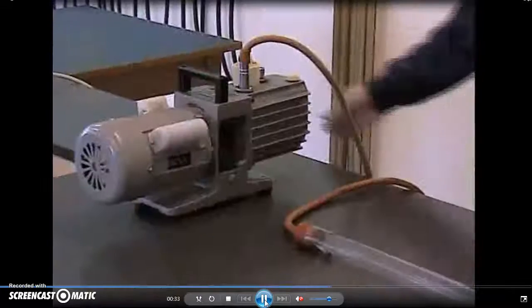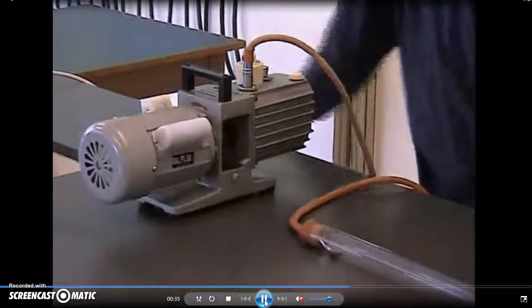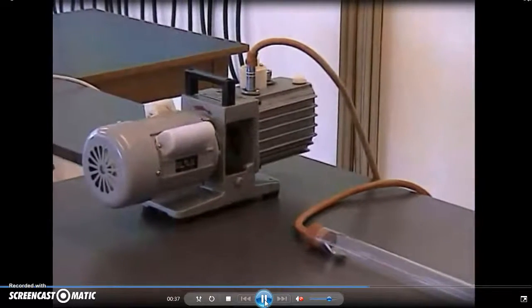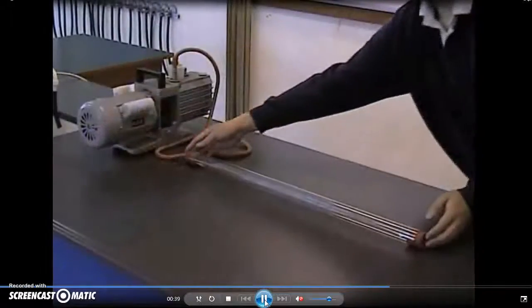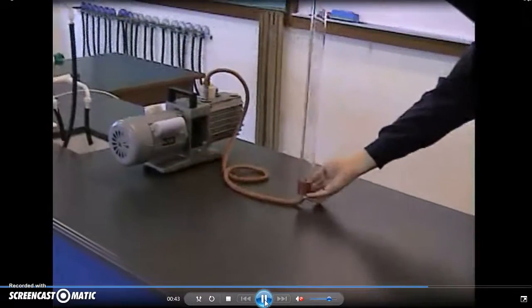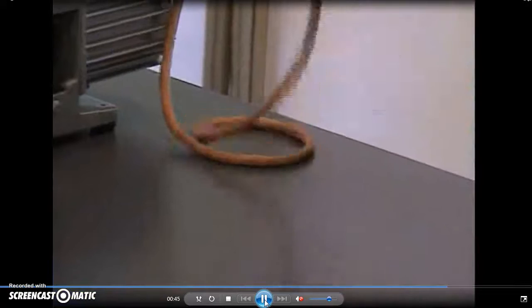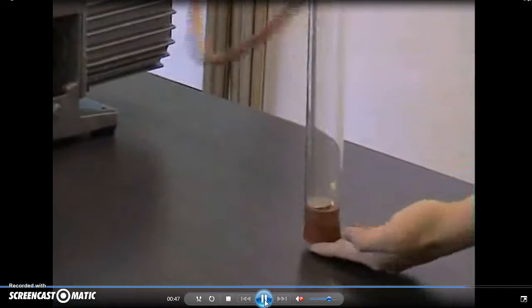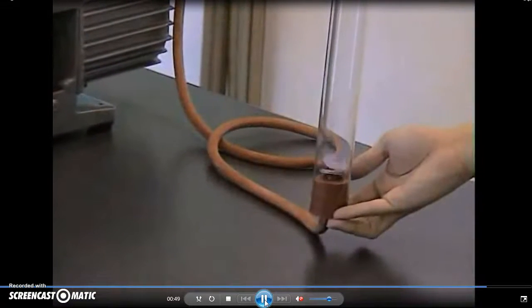Now we connect the glass tube to a vacuum pump and the air inside is pumped out. We place the glass tube vertically again, and this time we see both of them fall to the bottom at the same time.